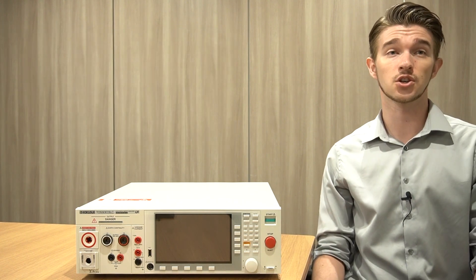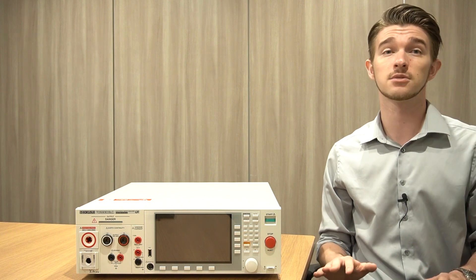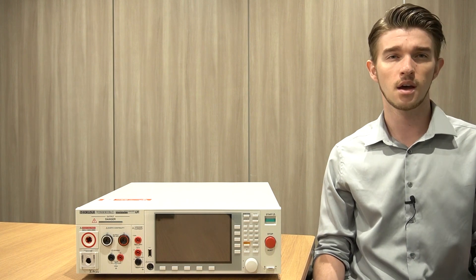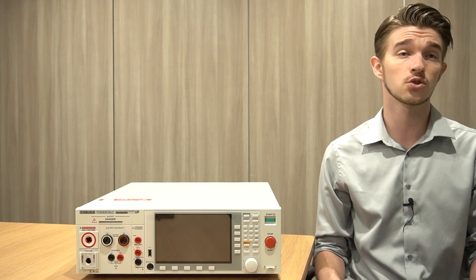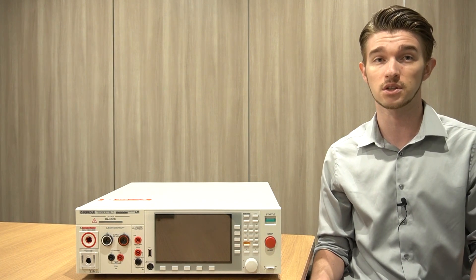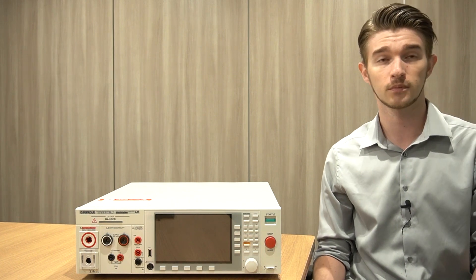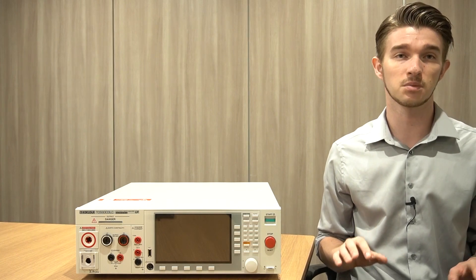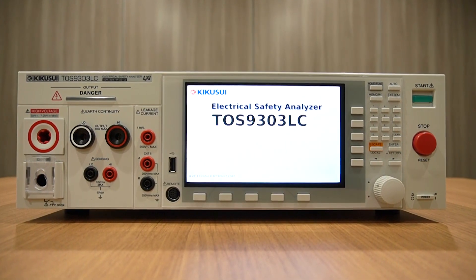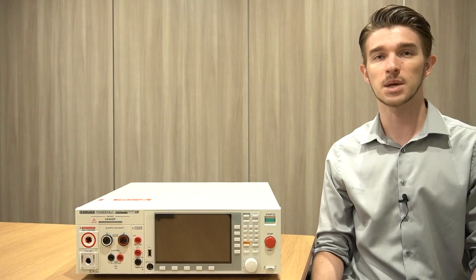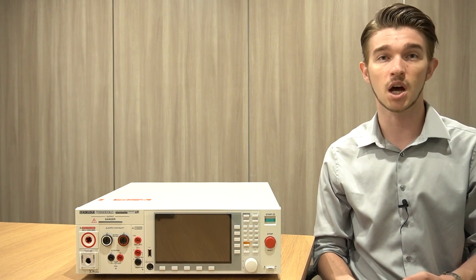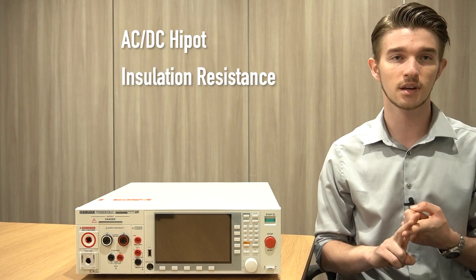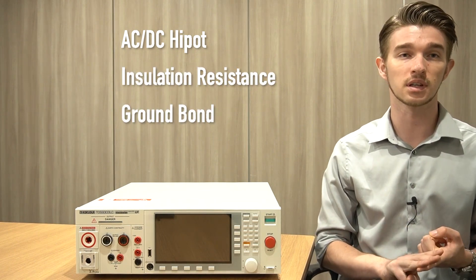The nature of patient leakage current tests requires cutting-edge measurement instruments capable of detecting extremely small traces of leakage current, as well as terminals that output 110 percent of the rated voltage of electro-medical equipment. Luckily, products such as the TOS 9300 safety analyzer series by Kikisu Electronics offer an all-in-one solution capable of not only patient leakage current tests, but come equipped with AC and DC high pot, insulation resistance, and ground bond testing capabilities in a single unit.